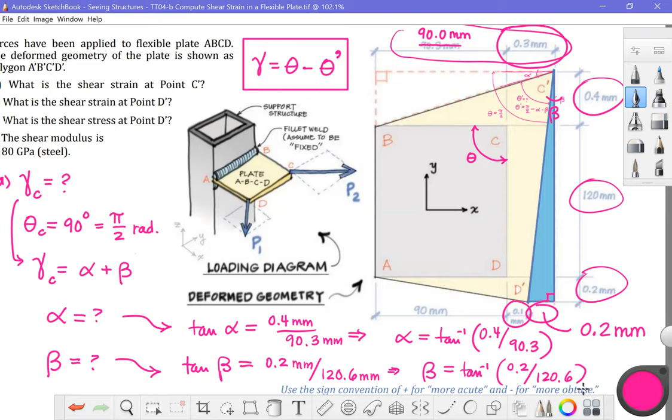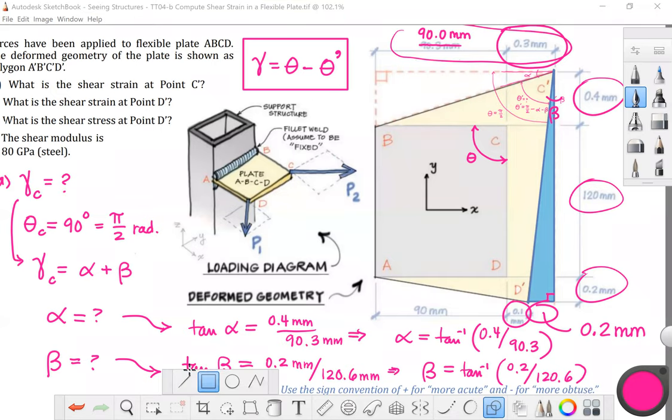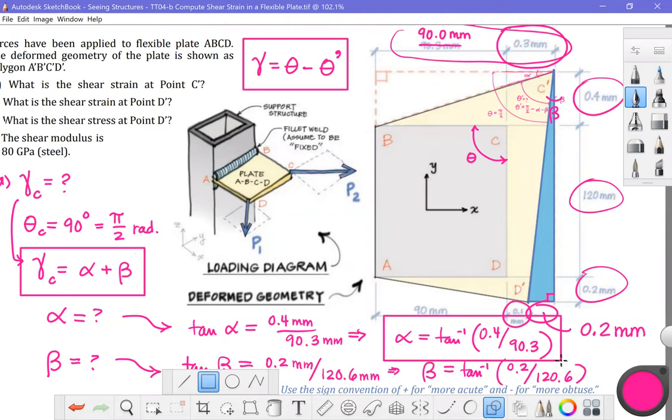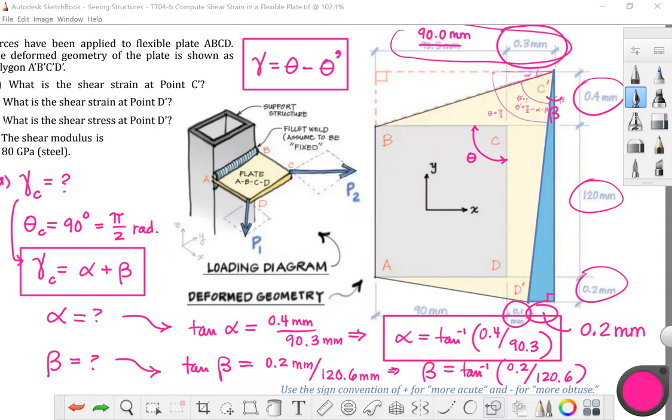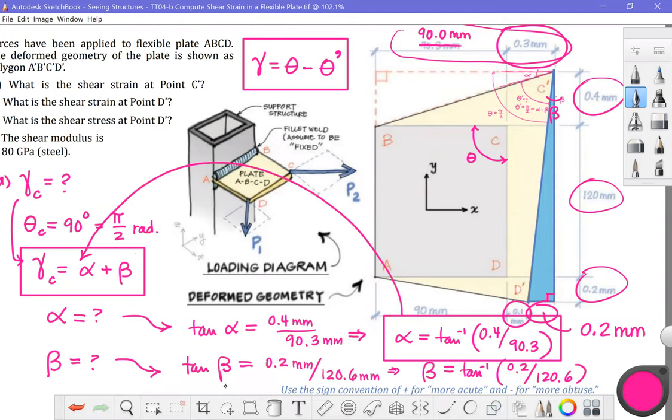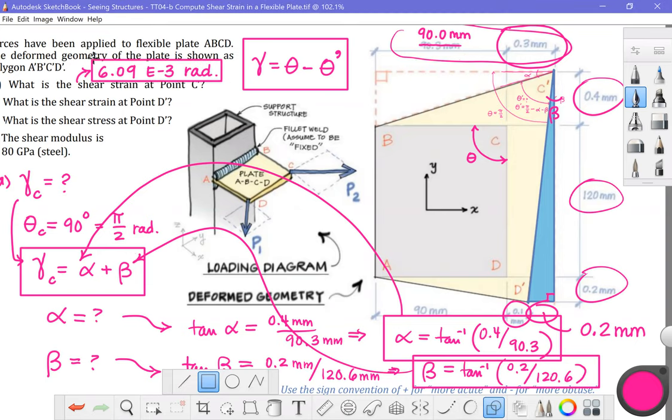Just as before, you could use small angle theory here and get that tangent identity out of there. But I'll show it in its most precise way. So it's the ratio of 0.2 to 120.6. At this point, it's basically calculator time. So in order to answer the problem, all we have to do is substitute in alpha for this term. Compute beta. Plug that in for this term. Sum the two together. And the answer you should get to that is 6.09 E minus 3 radians. Again, it is conventional to use radians and not degrees for shear strain. So that is the end of the first part of this particular problem.